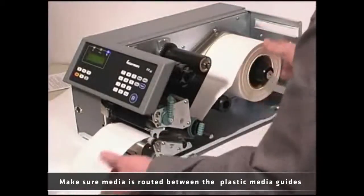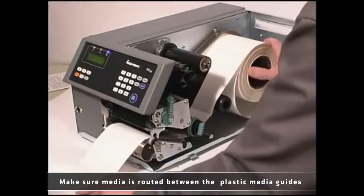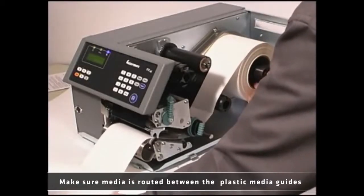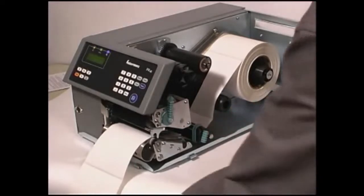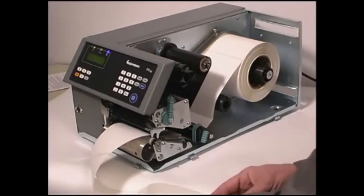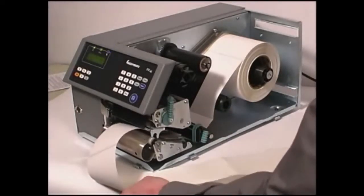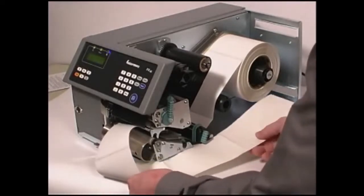Pull out approximately 40 centimeters, 15 inches of labels. Route the labels around the guide plate and back under the print mechanism to the take-up hub.